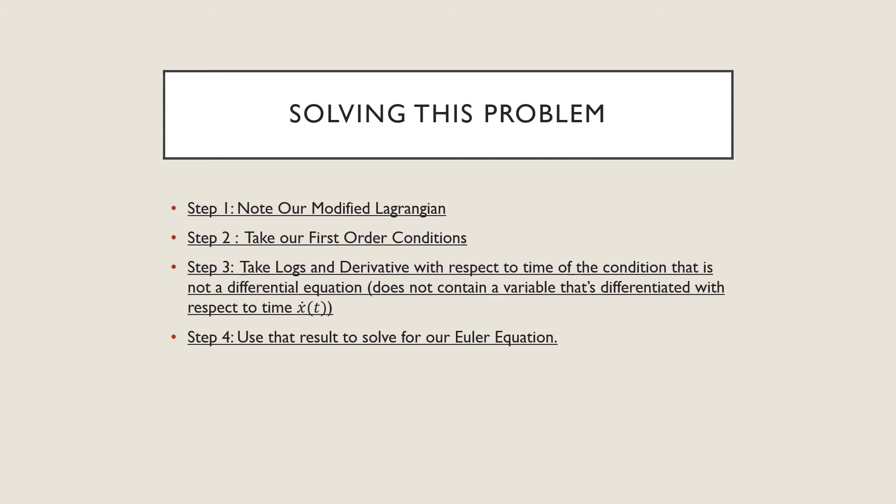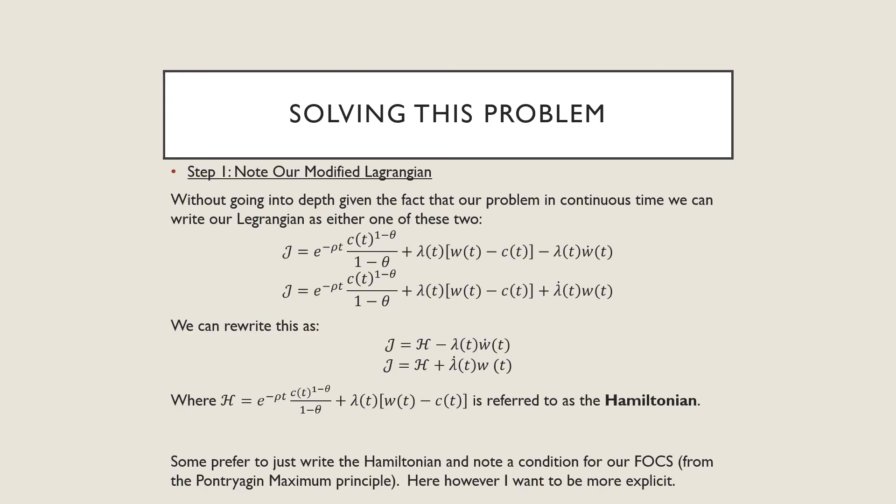Step number one is that we're going to note our modified Lagrangian. Step number two is we're going to take our first order conditions. Step number three is that we're going to take the logs and derivative with respect to time of the condition that is not a differential equation, meaning it does not contain this little dot term. And step number four is that we're going to use this result to solve for our Euler equation. This is very similar to what I've written down in our previous video.